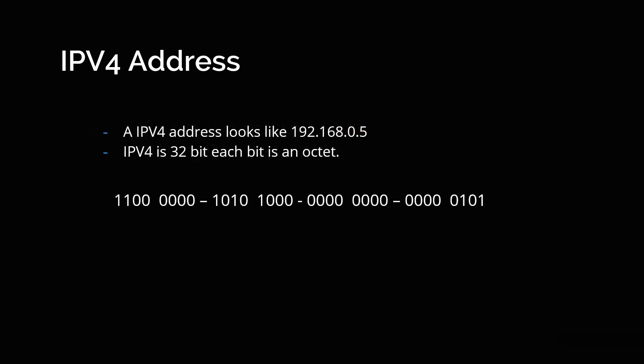Say for example, you have an IP address like 192.168.0.5. These sections are called octets. IPv4 is a 32-bit address and each section is an octet, so there are four octets. The first octet is 192, second is 168, third is 0, and the fourth is 5. Each octet is 8 bits. You can see the binary representation: the 8-bit binary for 192, for 168, for 0, and for 5. This is how each IP address is converted into its corresponding binary format.